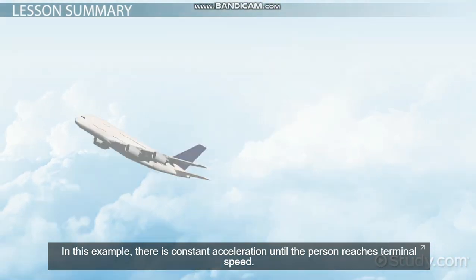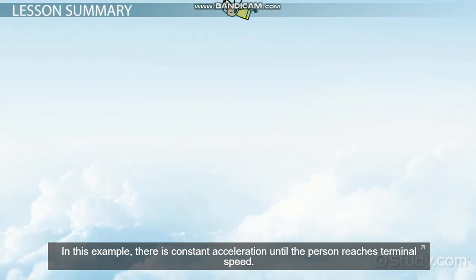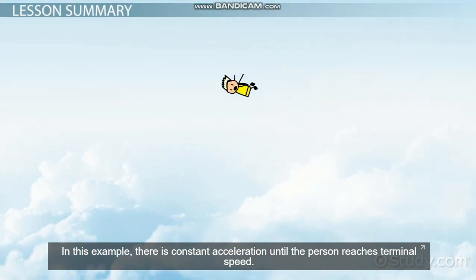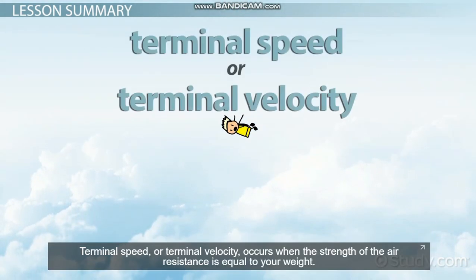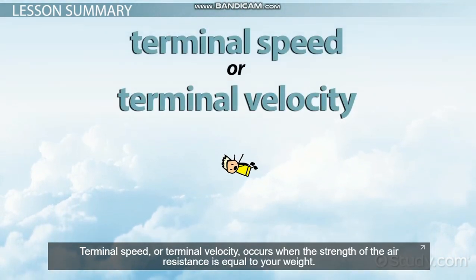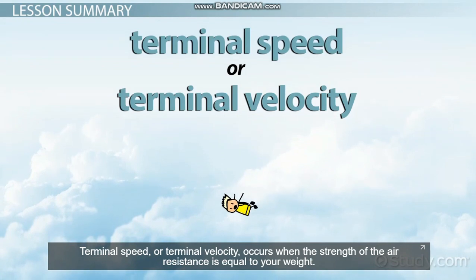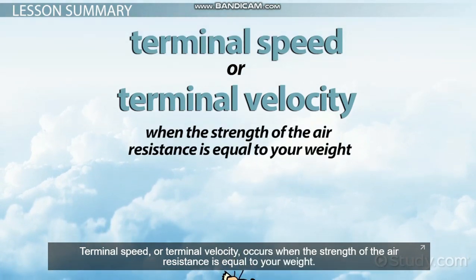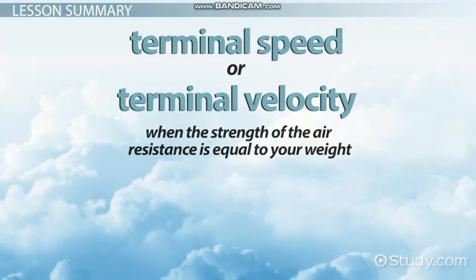In that example, there is constant acceleration until the person reaches terminal speed. Terminal speed, or terminal velocity, occurs when the strength of the air resistance is equal to your weight.